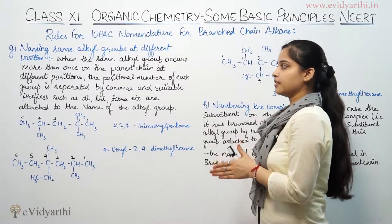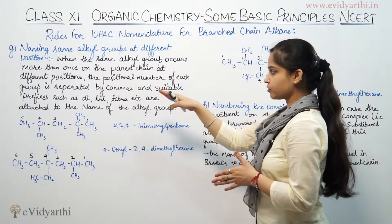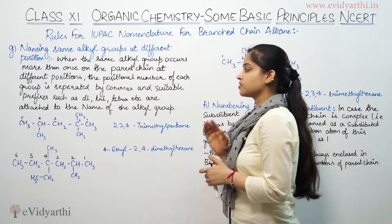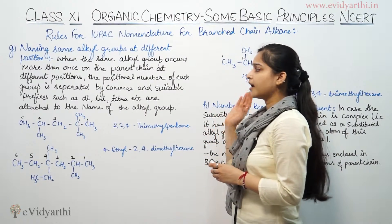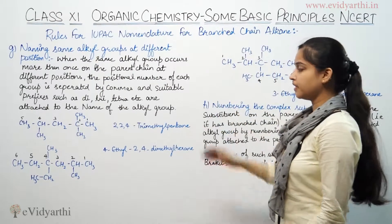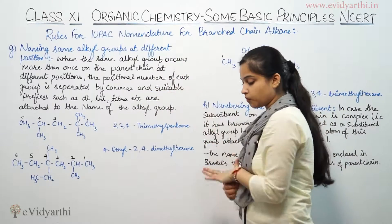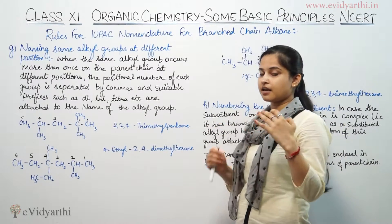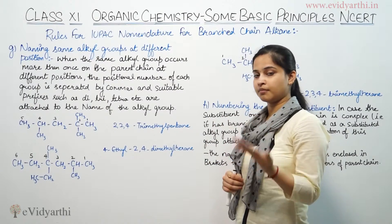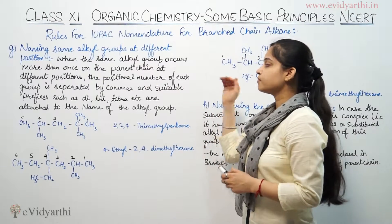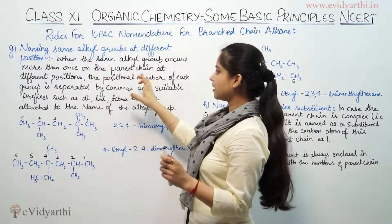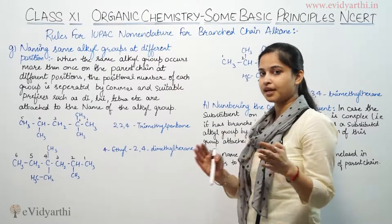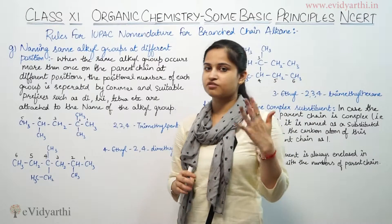When the same alkyl group occurs more than once on the parent chain at different positions, the positional number of each group is separated by commas, and suitable prefixes such as di, tri, tetra, etc. are attached to the name of the entire group. This rule says that if I have an organic molecule with a parent chain, I will see what groups are attached, and then do the numbering and naming.